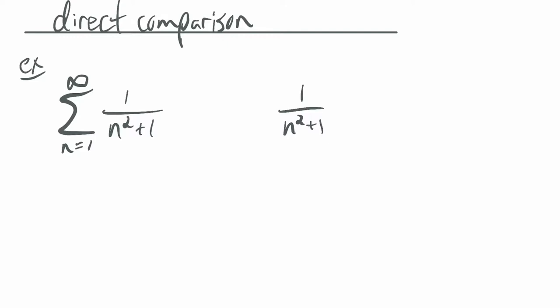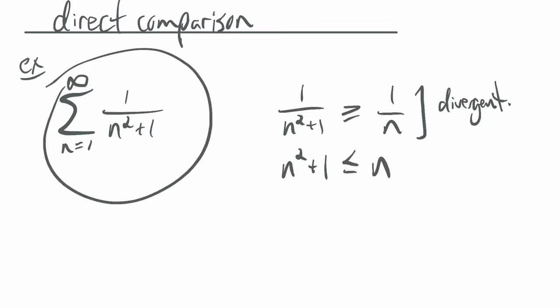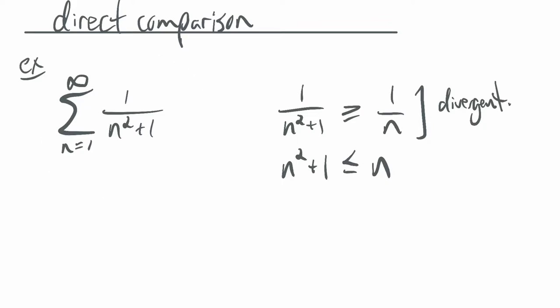If we were going to show that this was divergent, we'd want to say this is greater than something that we know to be divergent. The harmonic series we know is divergent. It turns out this doesn't work. If you flip both sides, you get n squared plus 1 is less than or equal to n. But if you square a number and then add 1, you don't get a lesser value. So this just does not work — this is not true. But we do know that this series is divergent, so we could try to show divergence using the harmonic series, but it turns out not to work in this case.